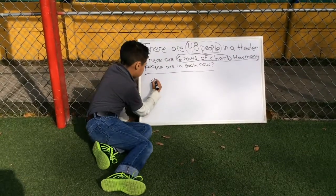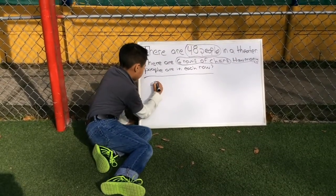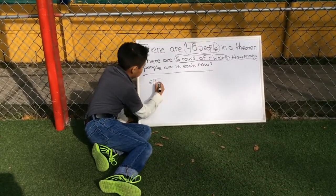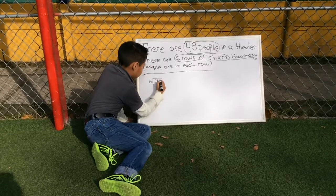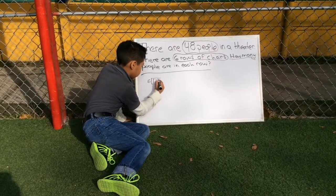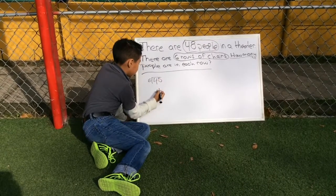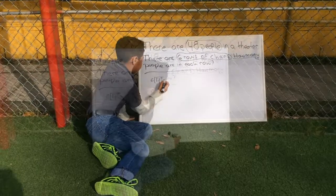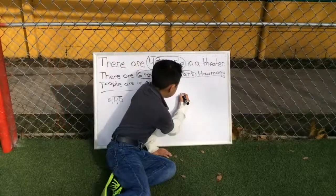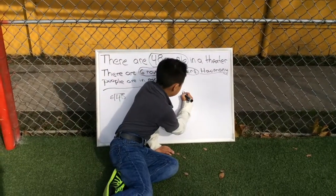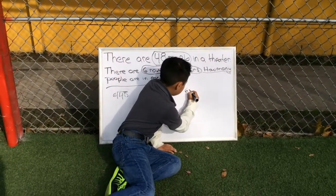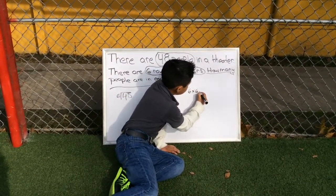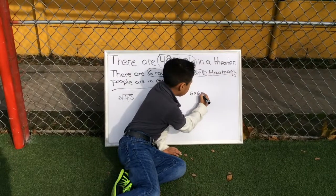We divide 48 by 6 to find how many people are in each row. We are going to use the multiplication table of 6 to figure out our answer.